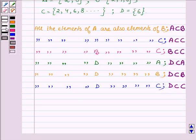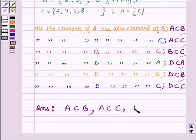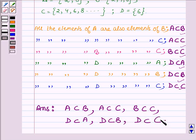And hence we have all these six pairs. Our answer is A is a subset of B, A is also a subset of C, B is a subset of C, D is a subset of A, D is a subset of B, and D is a subset of C.